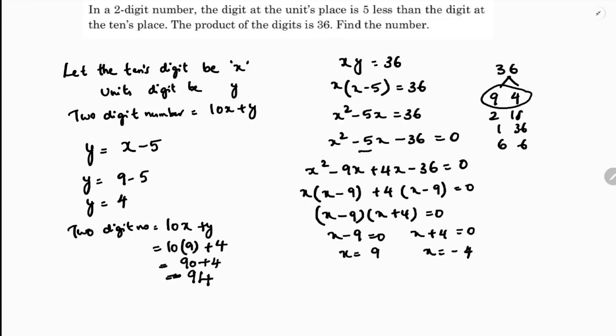If we take minus 4, here you will get y equals minus 4 minus 5, y equals minus 9. If we substitute in the number, 10 into minus 4 plus minus 9, minus 40 minus 9, minus 49. But we will not write in negative. Just you can take this number as 94.